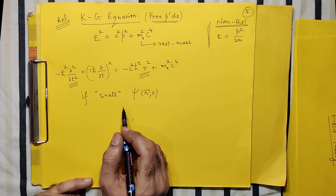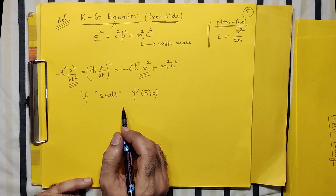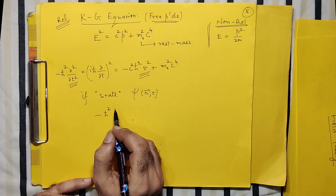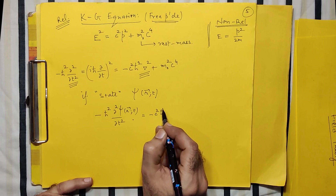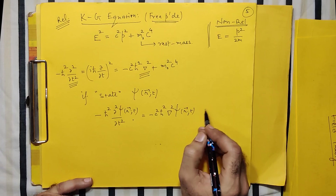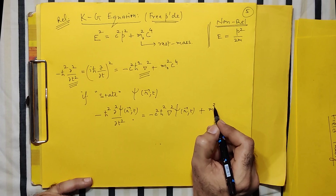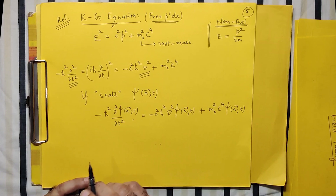The KG equation for a free particle moving with relativistically high speed looks like this: del² psi / del-t² = c²h-bar² nabla² psi(r,t) plus the relativistic correction term m₀²c⁴ psi. This is the famous Klein-Gordon relativistic equation.